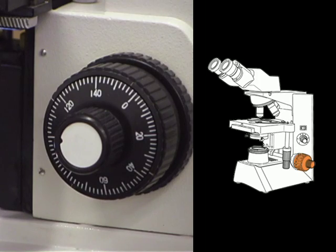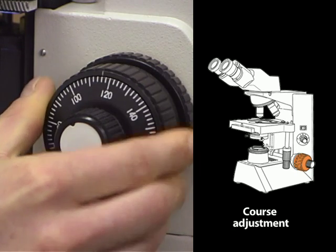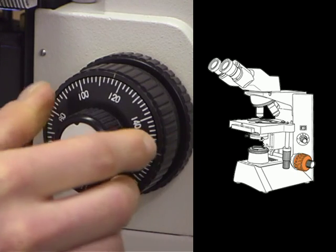There are two focus adjusting knobs on a compound microscope, a coarse adjustment knob and a fine adjustment knob. The coarse focusing knob always has a larger diameter than the fine. Use the coarse one first to get the objective approximately in focus, then use the fine one.